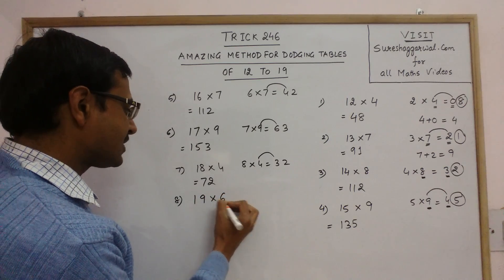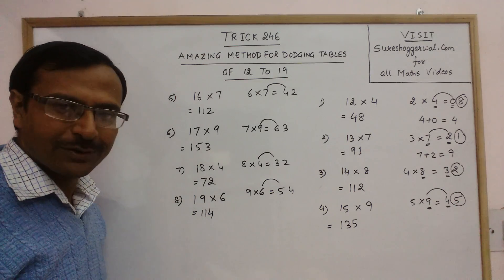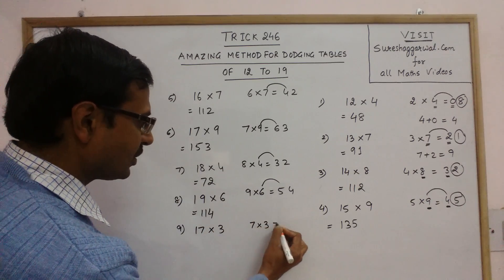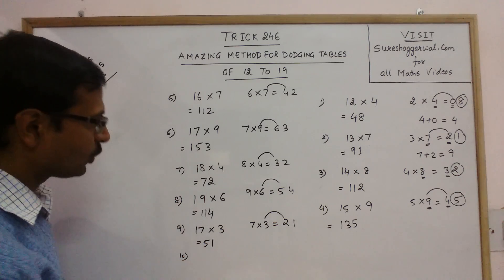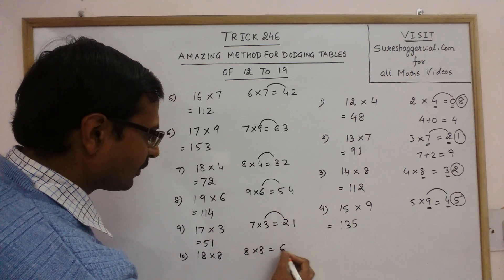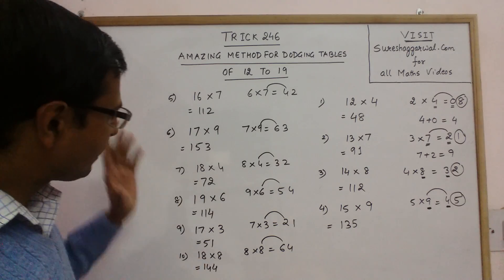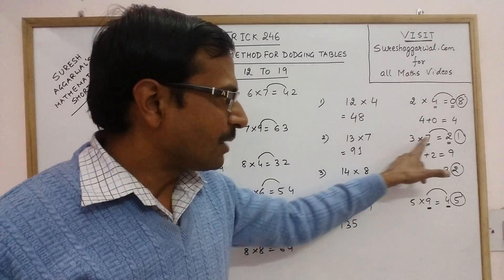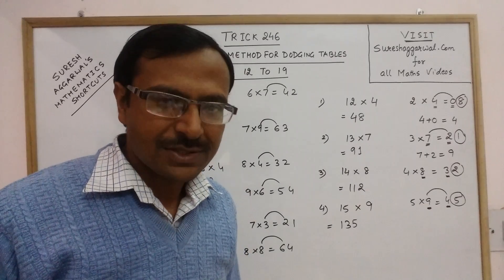19 into 6. 9 into 6 is 54. 6 plus 5 is 11 and last digit is 4, 114. One more example, then we will conclude this trick. Say we have 18 into 8. 8 into 8 is 64. 8 plus 6 is 14. And last digit is 4, 144. See dodging tables become so easy for students if they are given a small piece of paper and a pencil. They will scribble this thing in rough work and they will tell you the answer of dodging tables very easily in a matter of just 3 to 4 seconds.